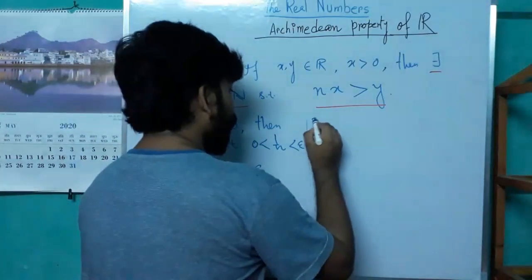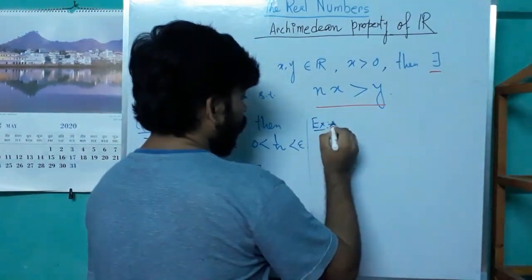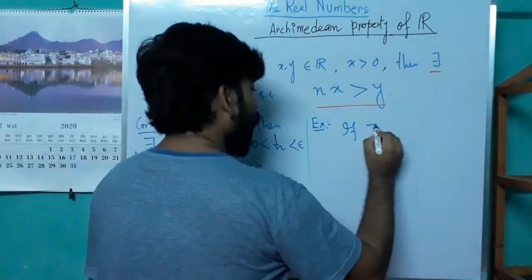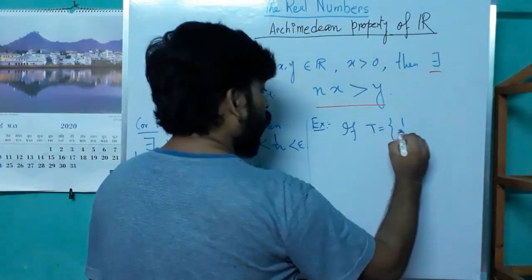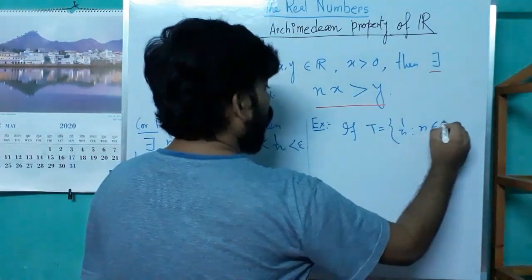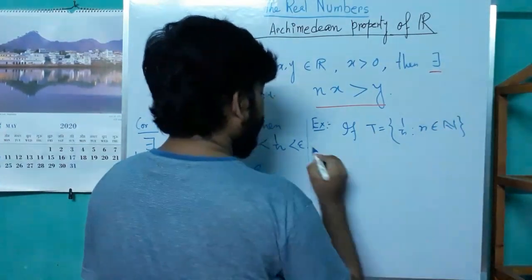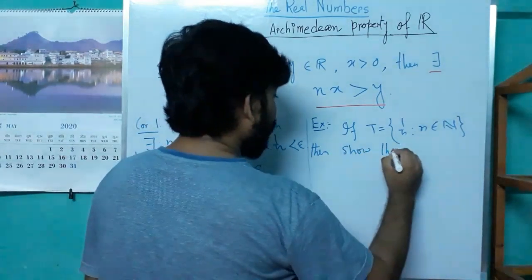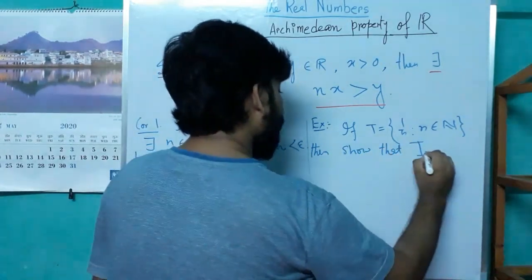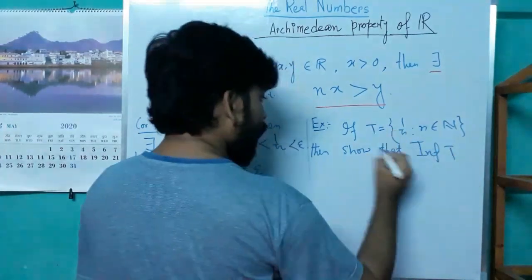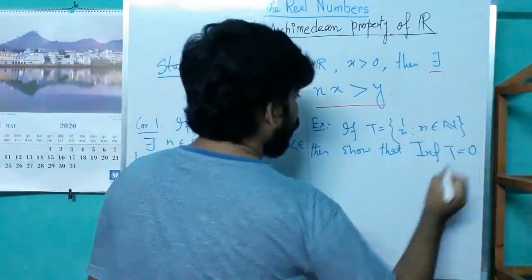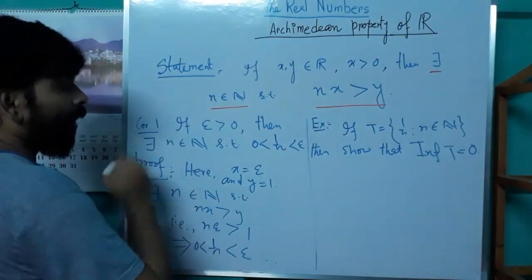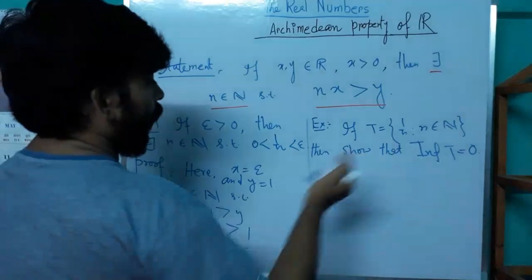Next exercise: if T = {1/n : n ∈ ℕ}, then show that the infimum of the set T is 0. This follows from the first application and the definition of infimum.